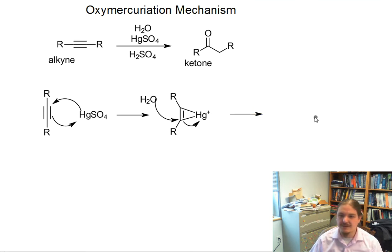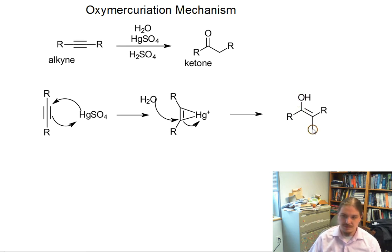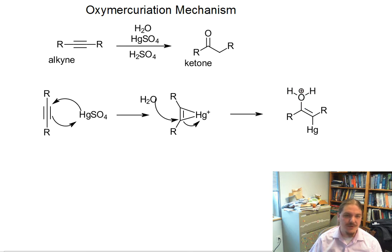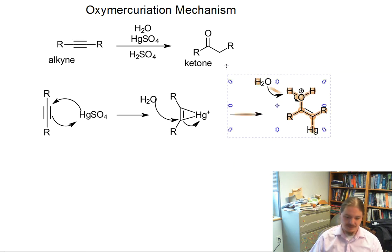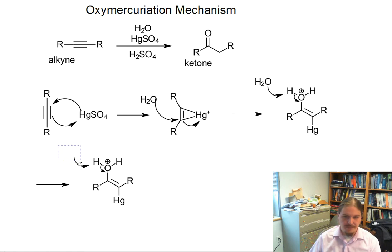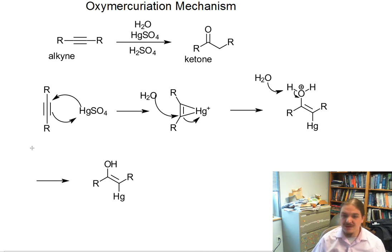Because water is a neutral nucleophile, we don't actually have an OH here yet — it's got an extra proton. So we need to remember that we want another water molecule to come around and take away this extra proton. Now we have something that looks like the enol intermediate that's formed. We still have a mercury on here; there might be other stuff attached — the sulfate anion or some water might still be attached on the other side of this mercury atom.